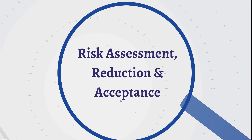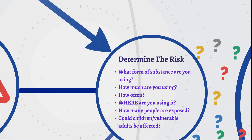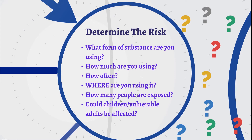Now that we've identified the potential risks in our local area, we need to look at assessing these, trying to reduce them, and once they've been reduced and mitigated as much as possible, accepting any residual risks. We need to determine the real risk of that harm occurring — how likely is it to happen? You should consider the form of the substance: is it a powder, a liquid or a gas? Solid substances such as tablets are much easier to control and contain than liquids, powders or gases. Powders and gases are particularly difficult to manage as they can very easily be dispersed into the air from where they can be inhaled, so they usually pose a higher risk.